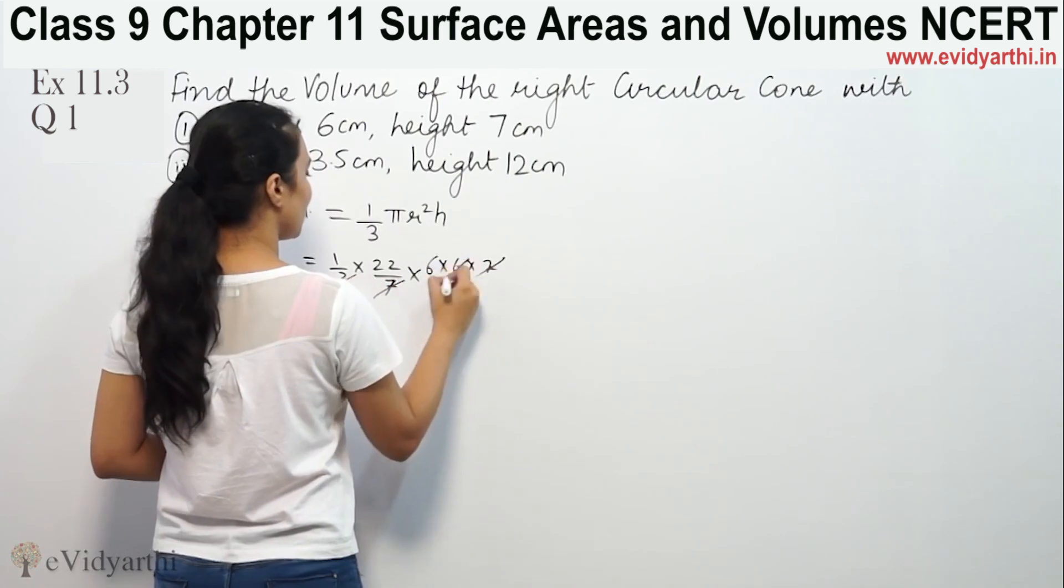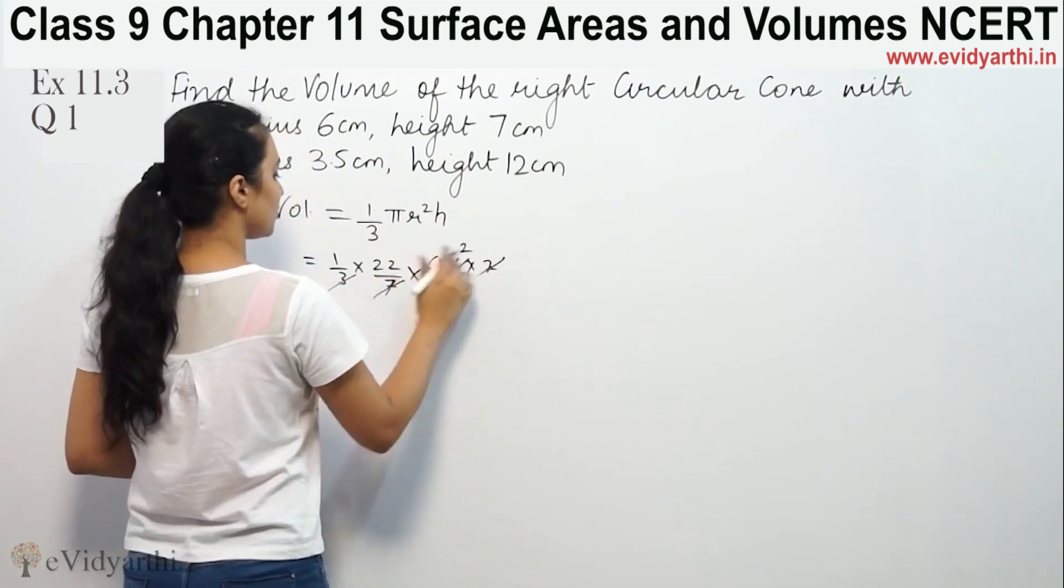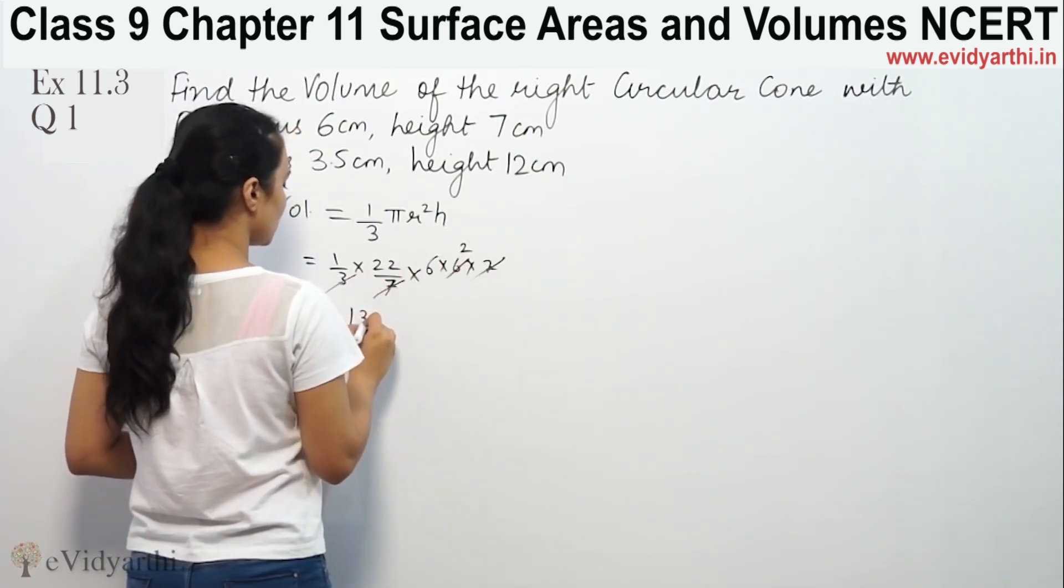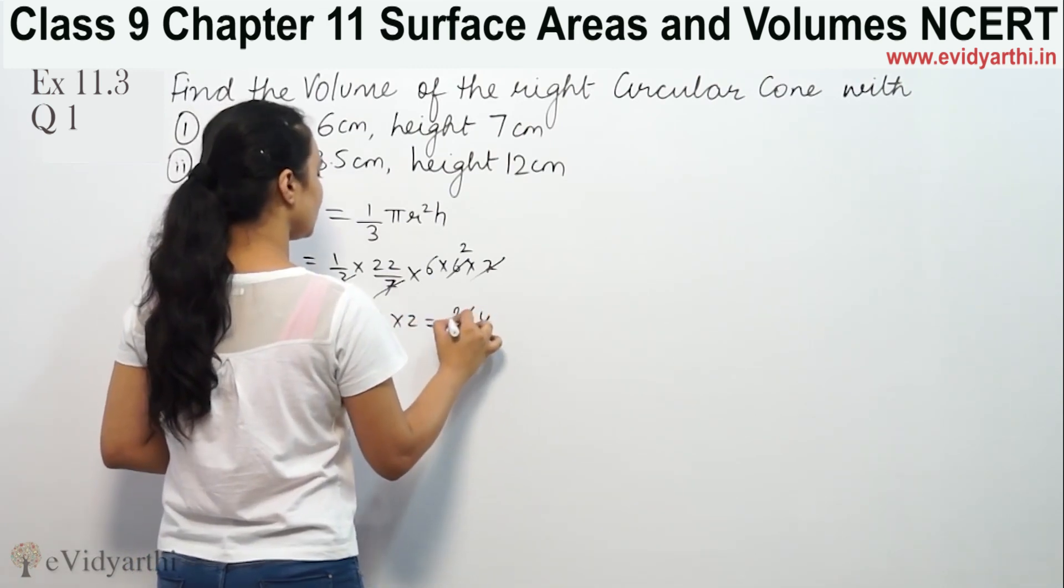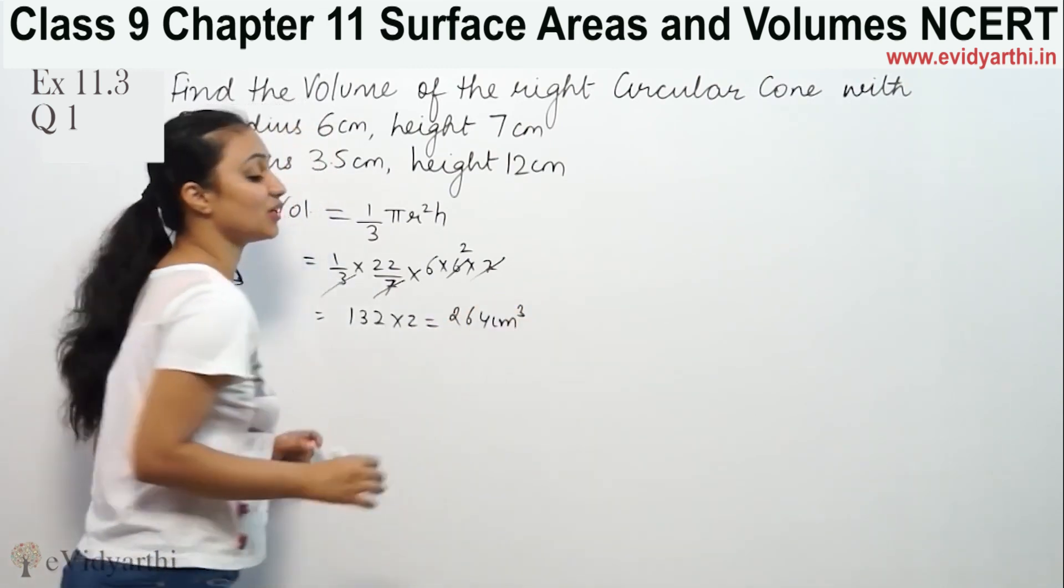So 7 and 7 cancels, 3 into 6 is 2. 3 × 2 × 6 = 132 × 2. This is 264 cm³.